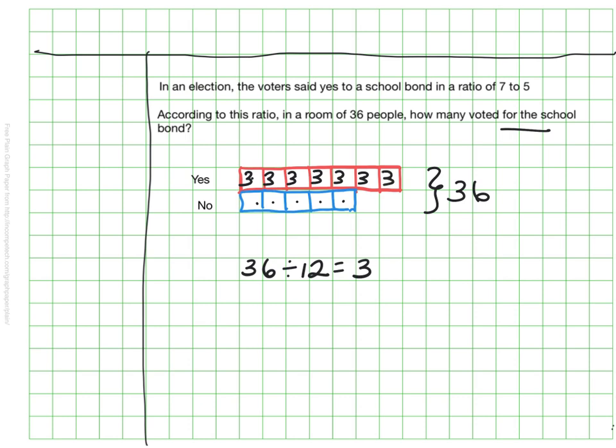And that would of course be yeses. That would be three seven times so there would have been 21 votes for yes. And something else that's neat that you can do here is if you wanted to know how many more people voted for the proposal you could say oh right here these are the kind of extra boxes.